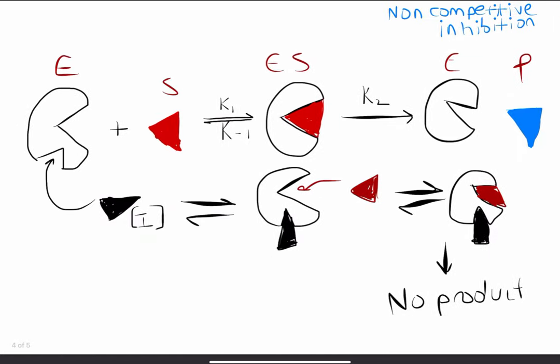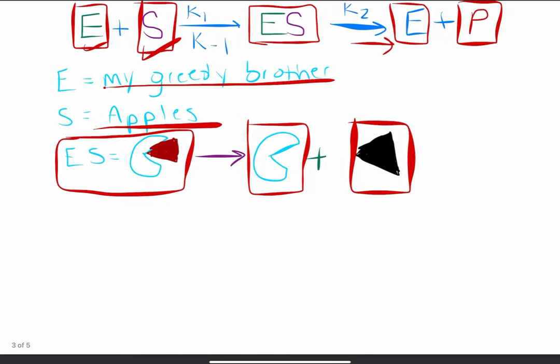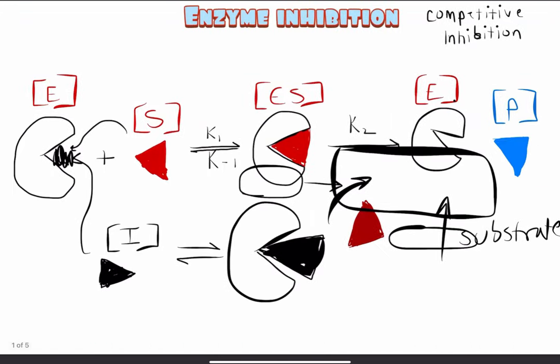So those are the three different types of inhibition. Uncompetitive: the inhibitor binds to the allosteric site after the substrate binds to the enzyme first. Non-competitive: the inhibitor binds to the allosteric site and does not compete for the active site with the substrate. Competitive: the substrate and inhibitor are fighting for the active site. That concludes this video. In the next video, we'll go more into KM, Vmax kinetics, and more equations. Thanks for sticking around — if you have any questions, leave them below. Have a wonderful day, watch all the videos, and get those A's!